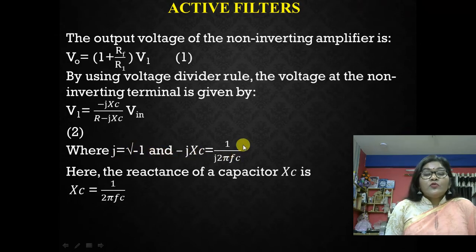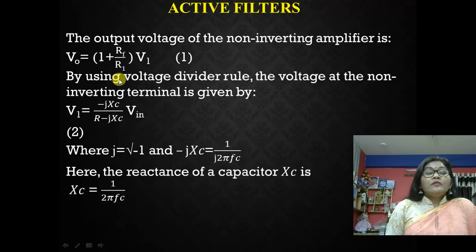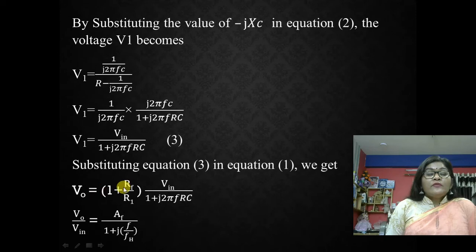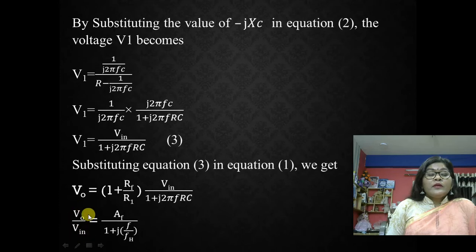Applying the voltage divider rule, V1 equals (minus j times XC) over (R minus j times XC) times Vin, where j equals the square root of minus 1 and XC equals 1 over (2 pi f C). Substituting this V1 expression into the output equation gives: V0 equals (1 plus RF over R1) times Vin over (1 plus j times f over FH). Moving Vin to the left side, this becomes the gain of the filter: V0 over Vin equals AF over (1 plus j times f over FH).